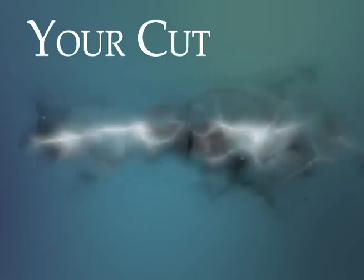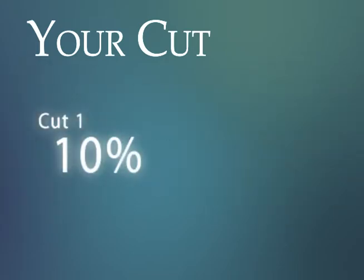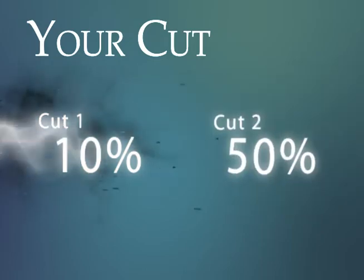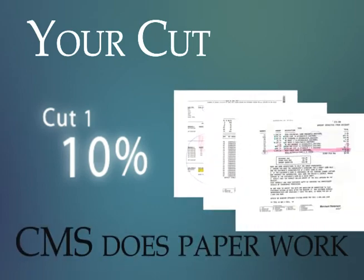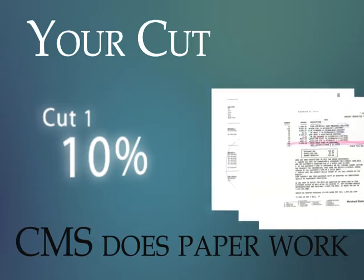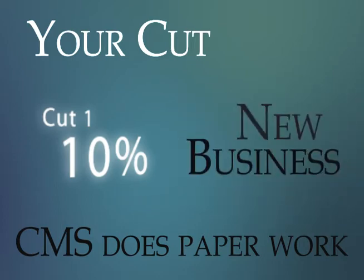Now, let's look at your cut of the profits. There are two cuts. You can earn a true 10% of the profit that CMS makes on the merchant account statements every month. All you have to do to earn 10% is to hand in the last three months of merchant account statements from any business you are working with, or lead a new, unestablished business to CMS. CMS will close the deal and fill out the paperwork. In essence, you get paid 10% for handing CMS warm leads.